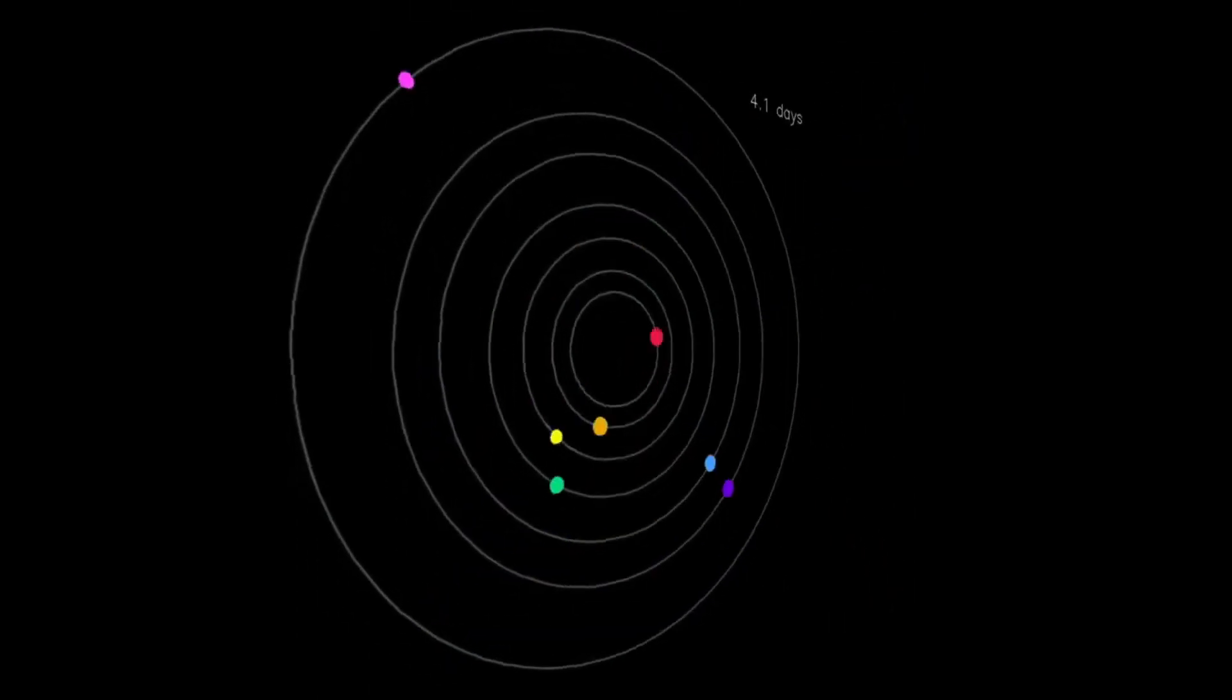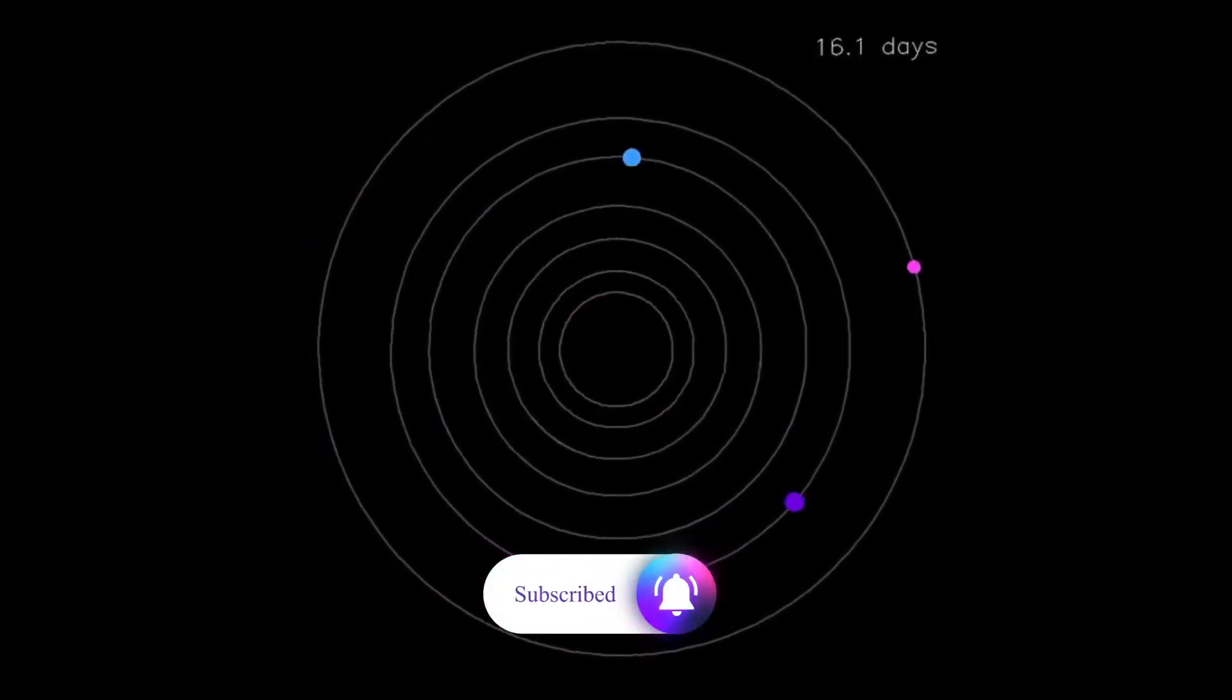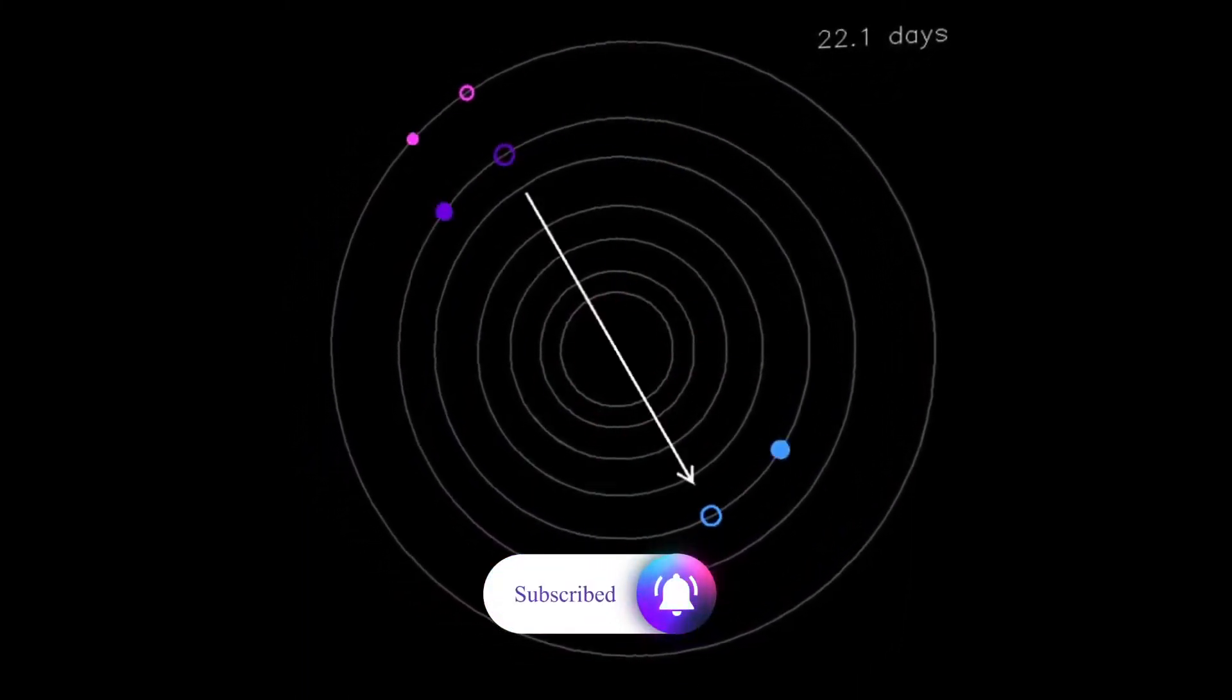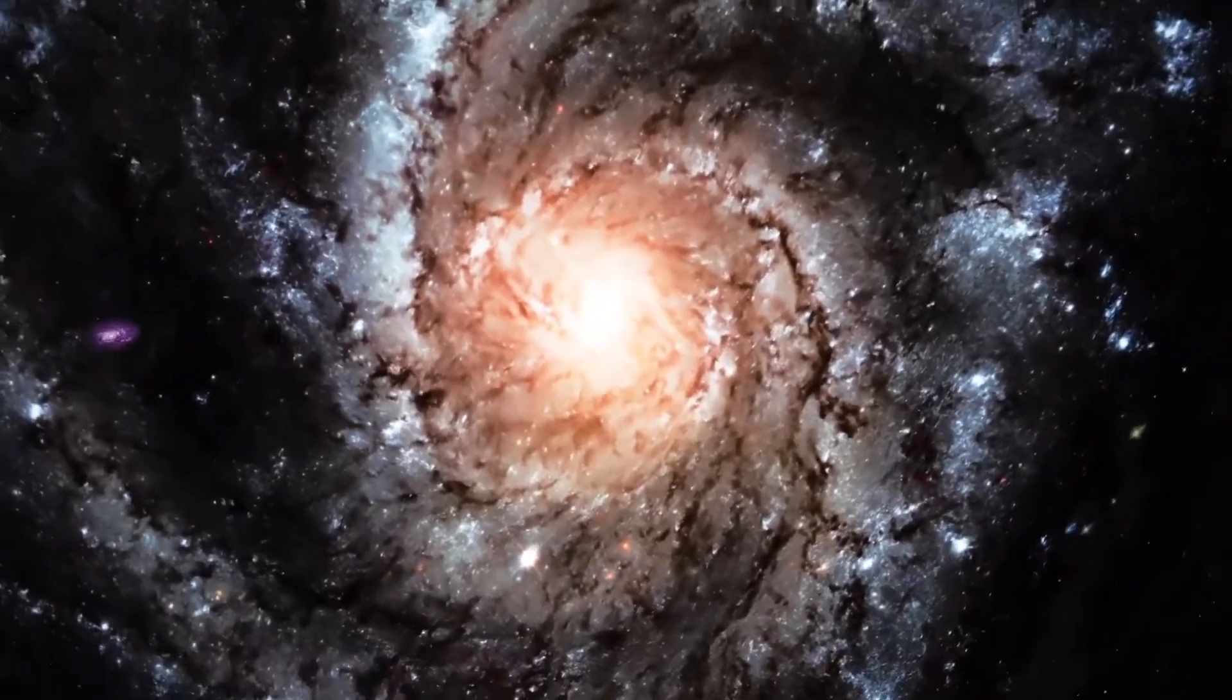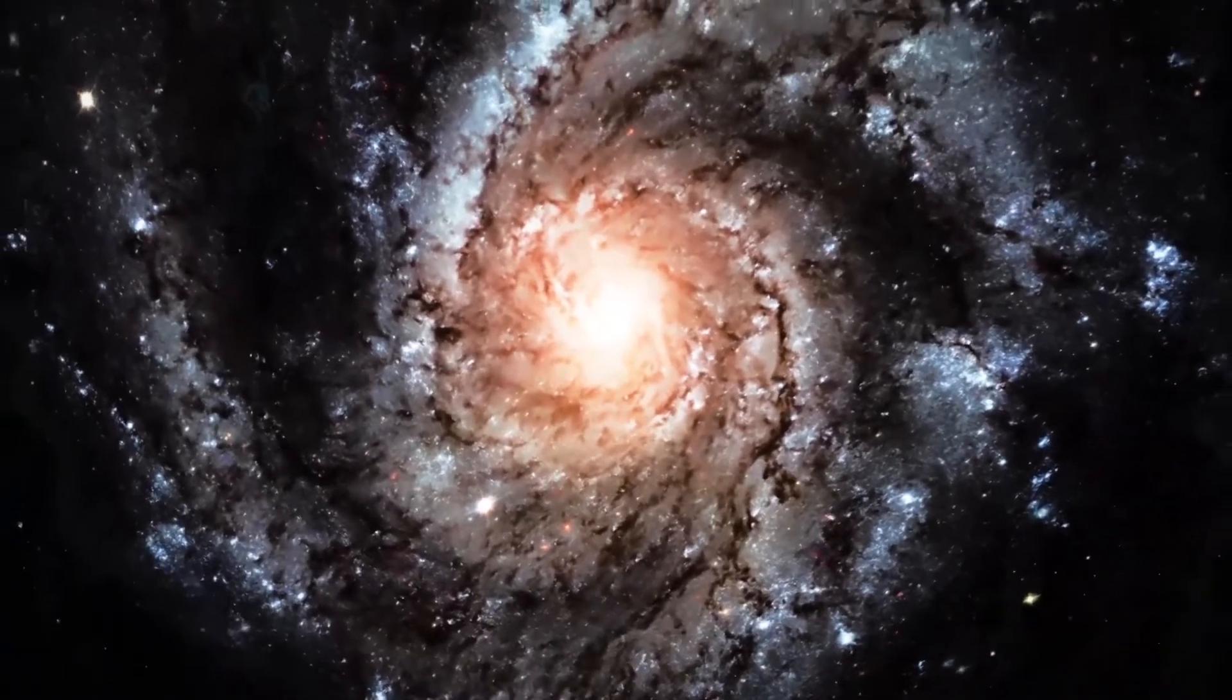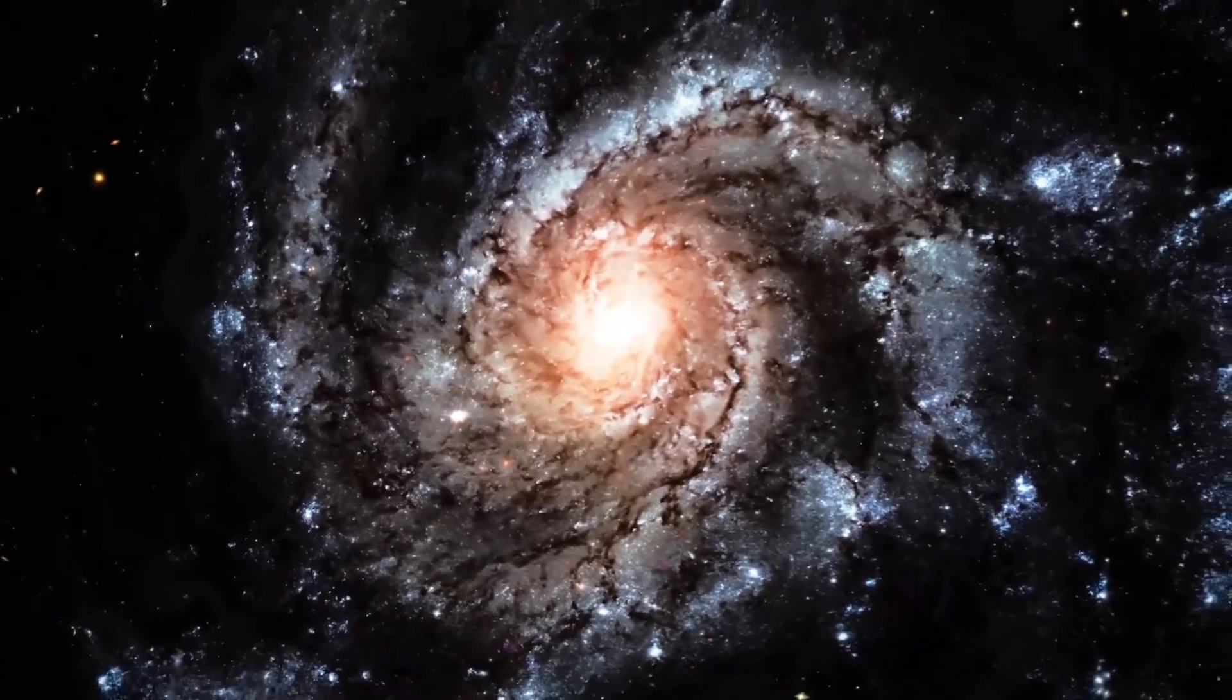The six planets orbiting Kepler-11 are all larger than Earth, with the largest ones comparable in size to Uranus and Neptune. As far as exoplanets go, these are relatively small worlds. Kepler-11 is located about 2000 light years from Earth.